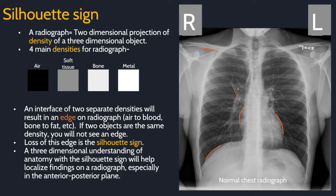When a part of the lung is filled with pus, blood, or water instead of air, there will no longer be a density difference between the lung and the adjacent tissue, so you'll lose that normal edge. Loss of these normal edges is called the silhouette sign. The silhouette sign with a three-dimensional understanding of thoracic anatomy will help you localize findings on a chest radiograph, especially in the AP plane.